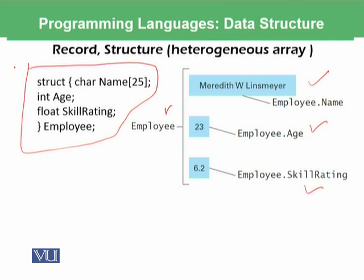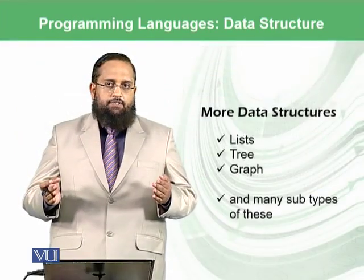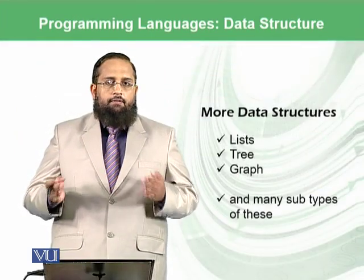We will define it like this in a programming language. We will say struct. We need a character whose name would be the name. The 25 consecutive memory locations of type character will be called name and then its age in integer, its skill rating in float and the overall name of all of this structure will be called as employee. And then there are many other data structures also available in reality.